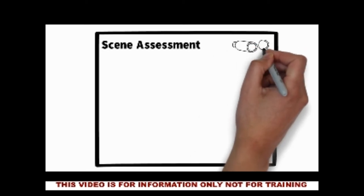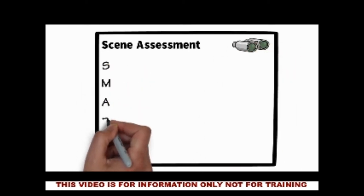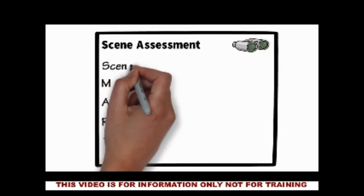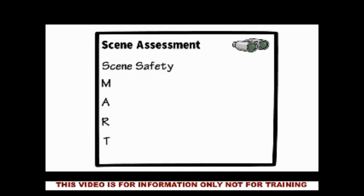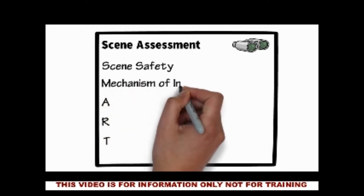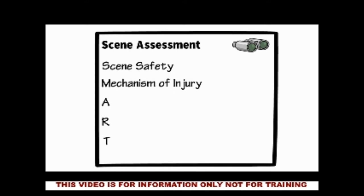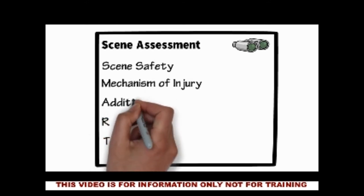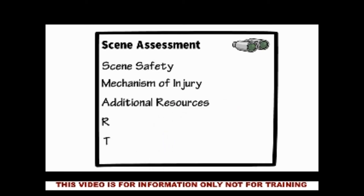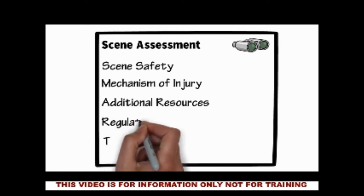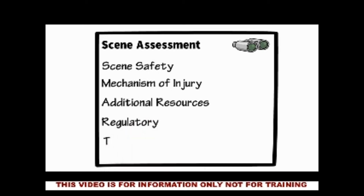For initial scene assessment you will be using a SMART approach. First, scene safety — this includes appropriate personal protective equipment or PPE, infection prevention and control, and any dangers to you or those around you. For mechanism of injury we need to include C-spine and catastrophic haemorrhage. You will also need to look at additional resources and request help. Regulatory includes any DNARs, advanced directives or recognition of life extinct situations. And triage — is this your only patient?